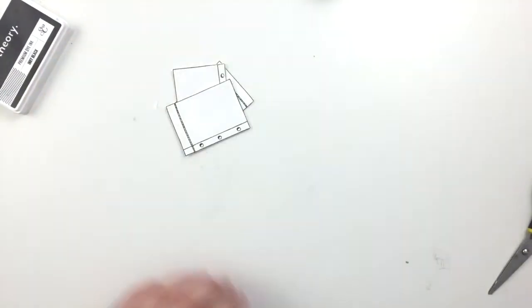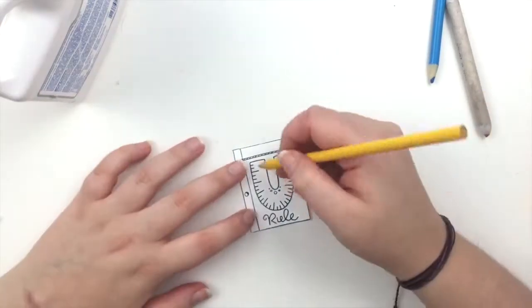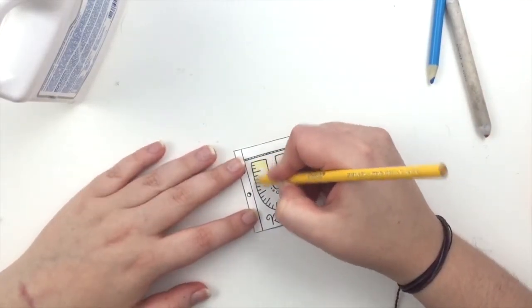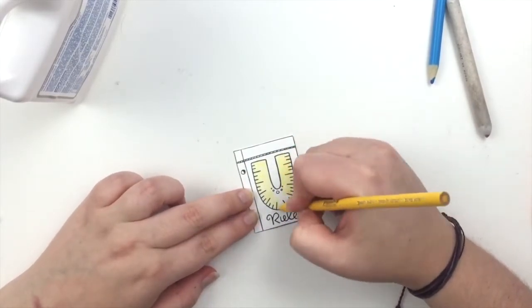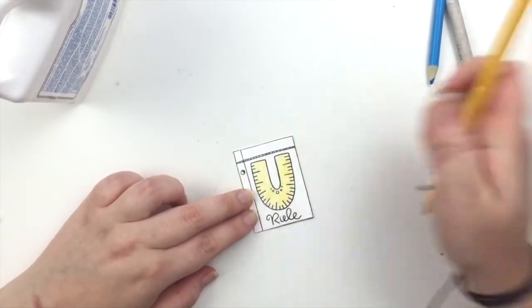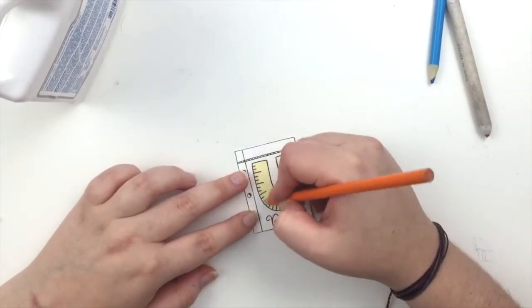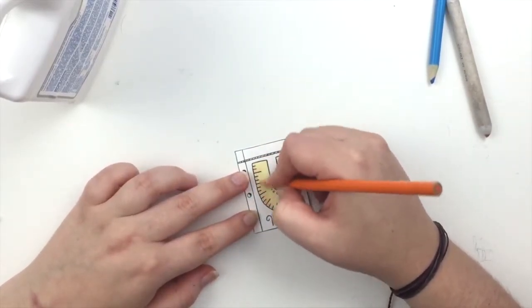So after that I stamped the U-Rule sentiment and it has a ruler on it, it's really cute, onto one of the pieces of paper. And I'm just going to color that in with colored pencils.